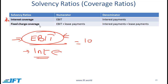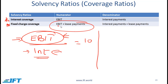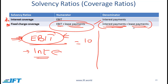Fixed charge coverage is EBIT plus lease payments divided by interest payments plus lease payments. In the numerator we use EBIT plus lease payments because typically EBIT is calculated after making lease payments; by adding back lease payments we are looking at how much money we are making before them. Just like interest payments are an obligation, lease payments are also an obligation, so it makes sense to look at the sum of the two numbers.